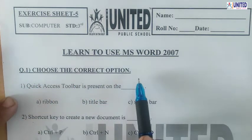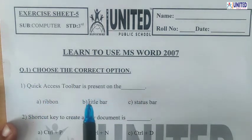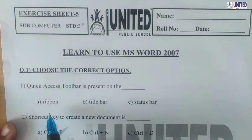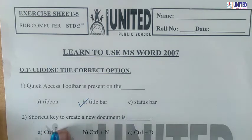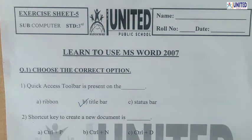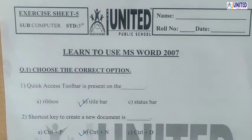Question number 1: Choose the correct option. Number 1: Quick Access Toolbar is present on — where is the Quick Access Toolbar? Options: A. Ribbon, B. Title Bar, C. Status Bar. The Quick Access Toolbar is present on the Title Bar, so click on option B. Number 2: Shortcut key to create a new document is — the options are Ctrl+P, Ctrl+N, Ctrl+D. We have to use Ctrl+N. N stands for New, so the answer is B.